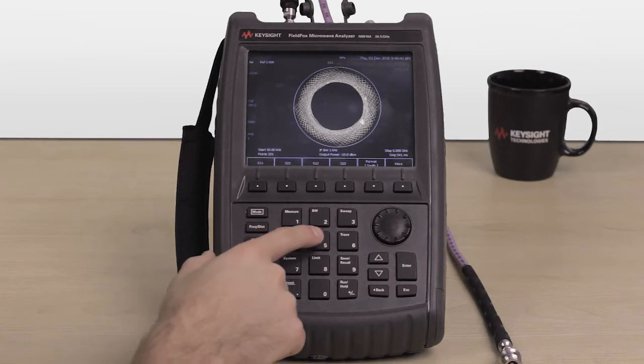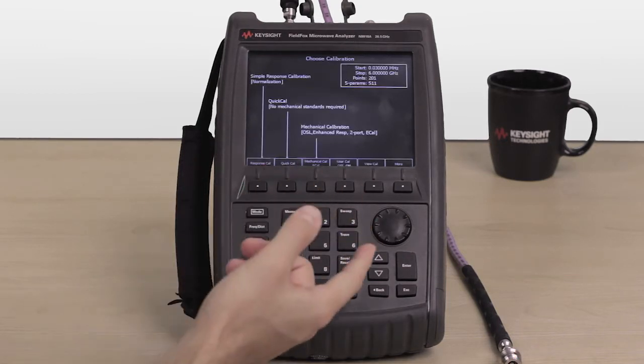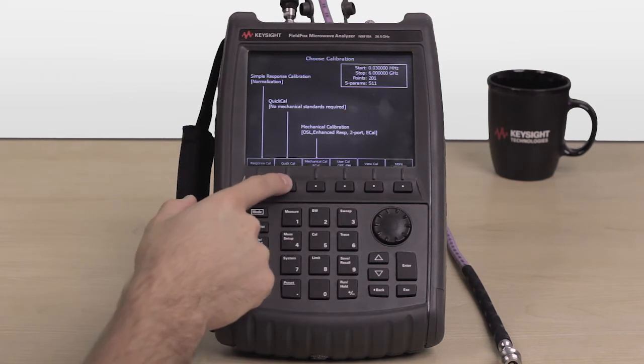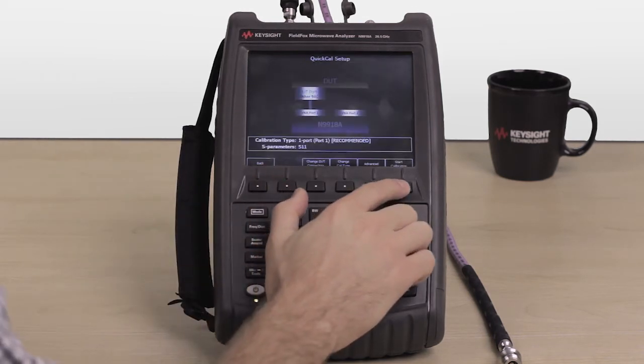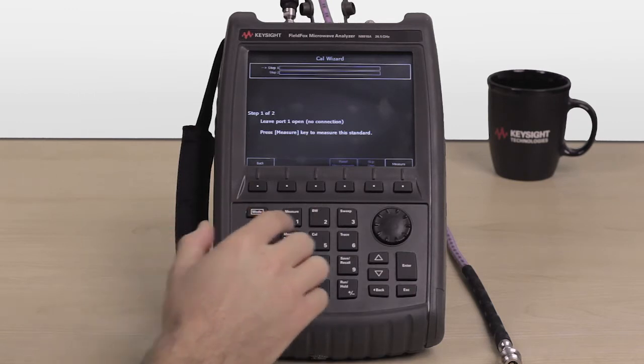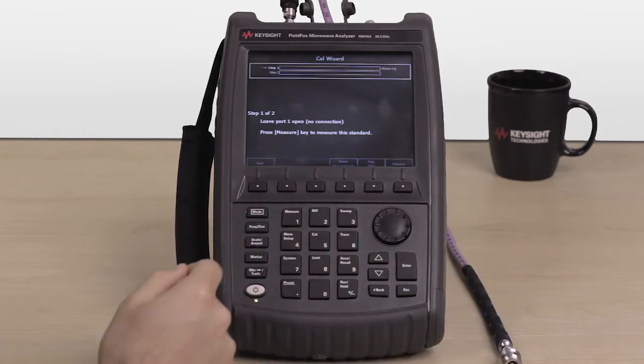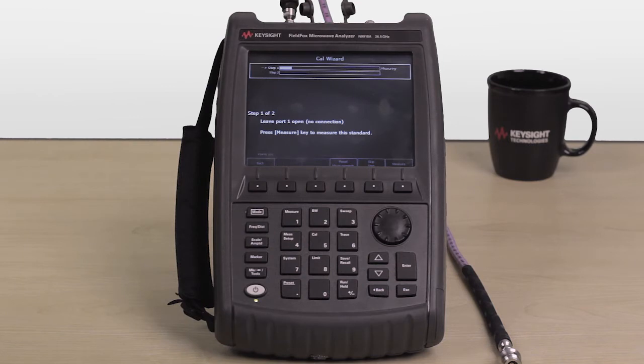We're going to need to go to Cal and we're going to choose Quick Cal since we don't need any mechanical standards. Then go to Start Calibration. We have an open connection so we're going to press Measure. And what we're going to expect to see is our impedance shift from all over the place to around infinity ohms.